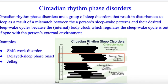Circadian rhythm phase disorders can be defined as a group of sleep disorders that result in sleep disturbances as a result of a mismatch between a person's sleep-wake behavior and their desired sleep-wake cycles, because their internal body clock is out of sync with the external daylight environment.